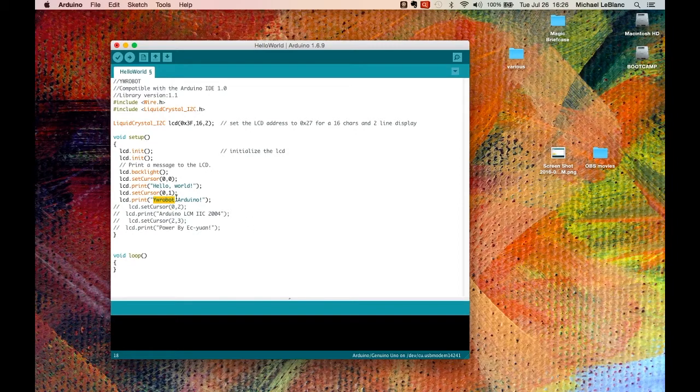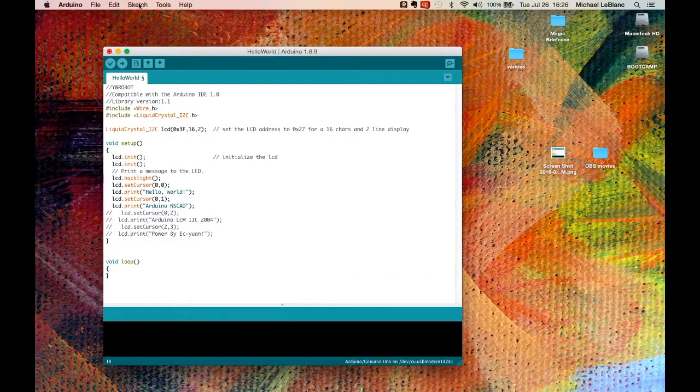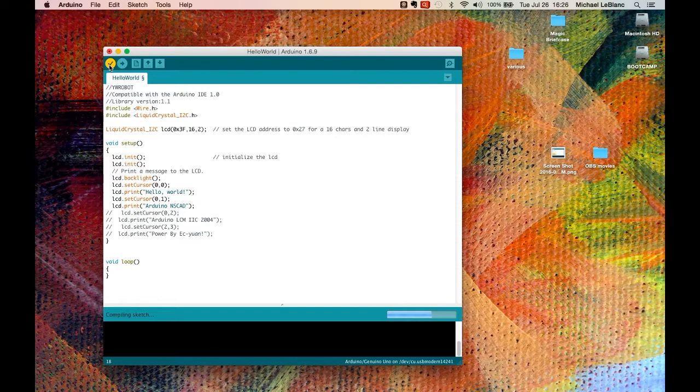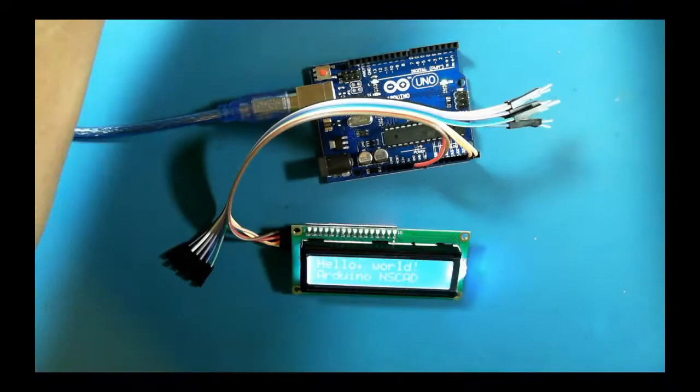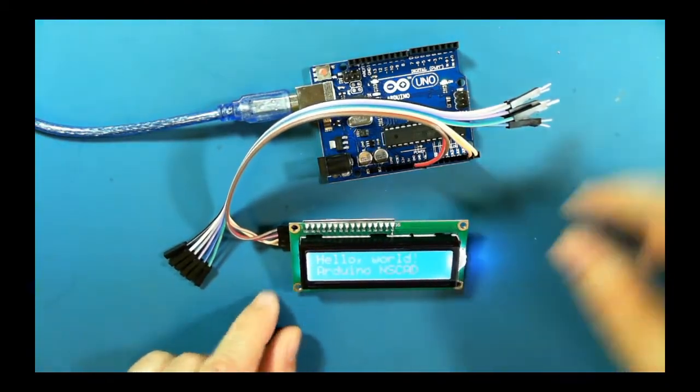And we'll comment that out and we'll put in, let's see if NASCAD works. Arduino NASCAD. So let's see if that uploads. We'll verify it first. And we'll upload and then we'll switch over to our camera.